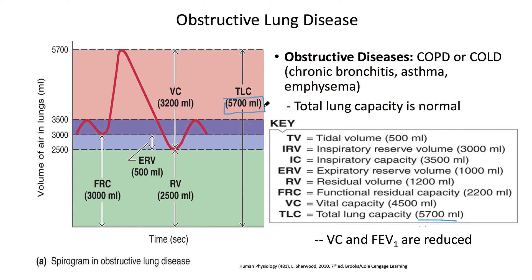The next number that is also the same is the purple region — the tidal volume. That is a normal breath. In a normal breath, someone with an obstructive lung disease can still get 500 milliliters of air, which is exactly what you see here.